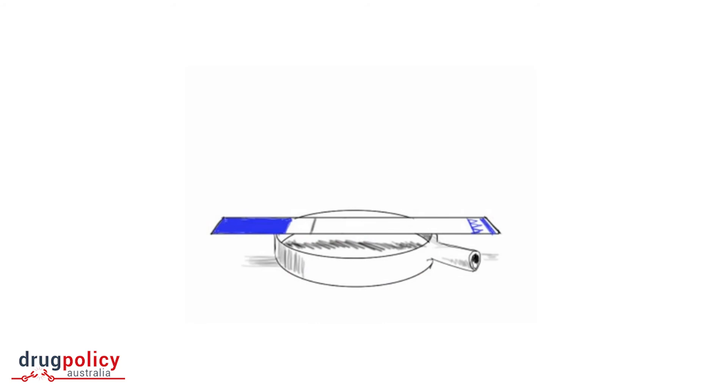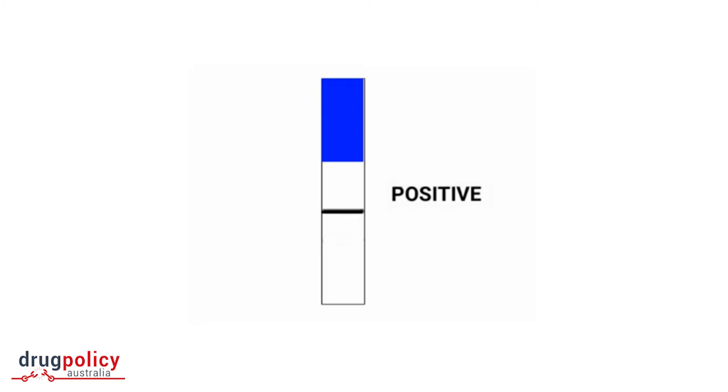Onto the results. One line is positive for fentanyl and two lines are negative. The drawback is unfortunately they don't tell you the percentage of fentanyl present, but knowing is half the battle.